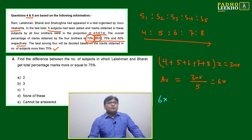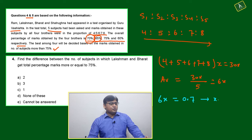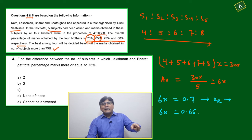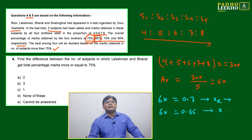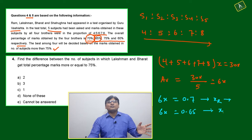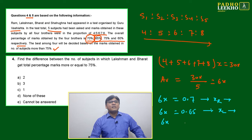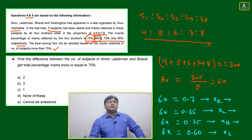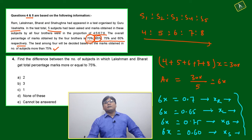For Ram: 6x = 0.7, giving the value of x for Ram. For Lachman: 6x = 0.65 (overall score is 65%). You can take x in percentage — no need to convert further. For Bharat: 6x = 0.75, and you calculate x for Bharat. For Satrugna: 6x = 0.60, and you calculate x for Satrugna. Once you have x_R, x_L, x_B, and x_S, multiply them by the proportion 4:5:6:7:8 to get the five subject percentages for each brother.